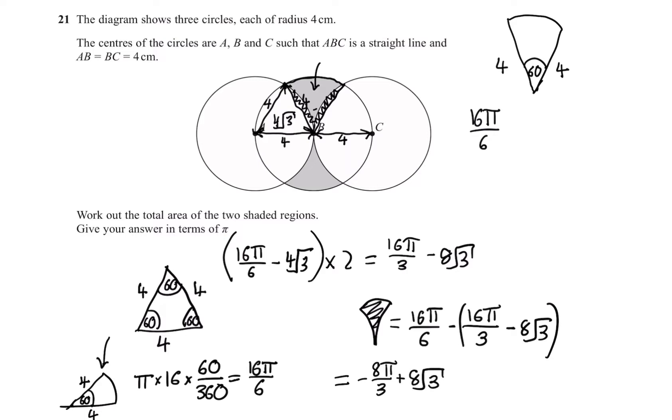So we're almost at the answer there. We have this top gray section, but we want the bottom gray section as well. Luckily for us, that's going to have the same area. So we just multiply this whole thing by two, giving us our final answer equal to 16 root three minus 16 pi over root three.